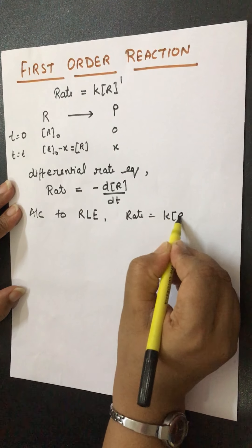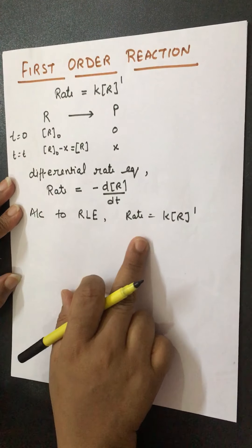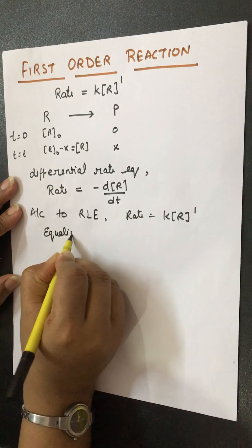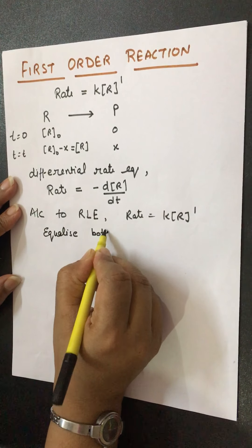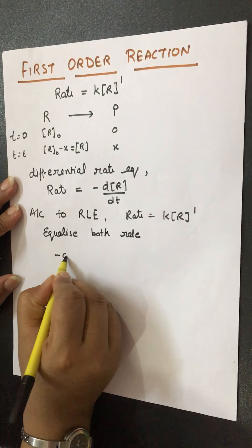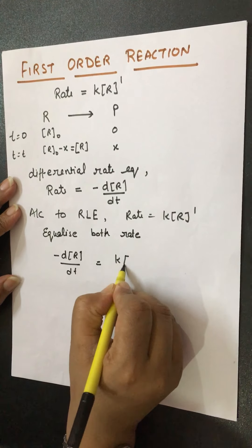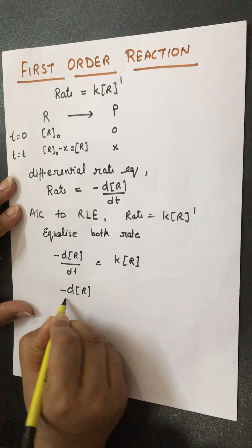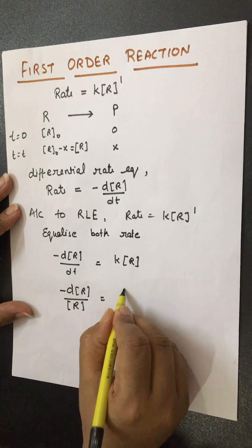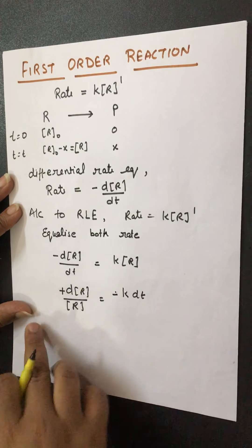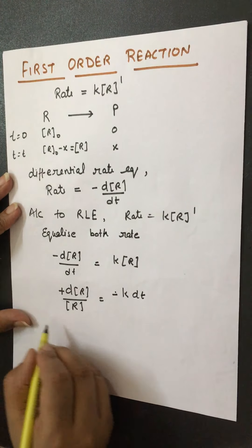According to the rate law expression, rate equals to k·R to the power 1. Both are formulas for rate, so we can equalize them. Minus dR over dT equals to k·R. We can rearrange this so concentration of reactant is on the left-hand side and the constant and change in time are on the right-hand side, and we also change the position of the sign.